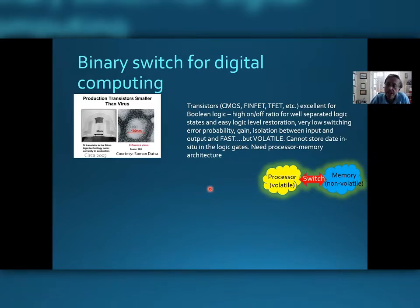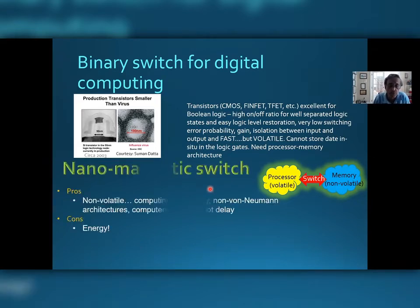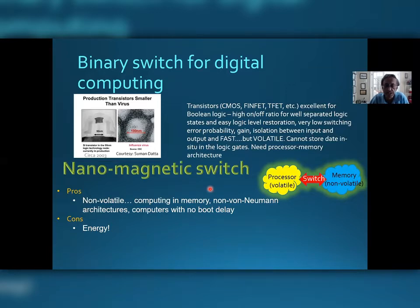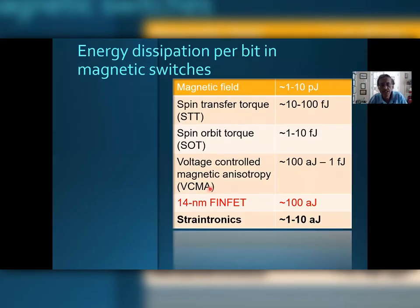So people started talking about non-volatile binary switches, and the one that is most popular is of course a nanomagnetic switch. It is non-volatile, therefore it allows things like computing in memory, non-volatile memory, non-volatile memory computing architectures, computers with no boot delay, etc. But there is a price to pay, and the price has to do with excessive energy consumption or energy dissipation in a magnetic switch.